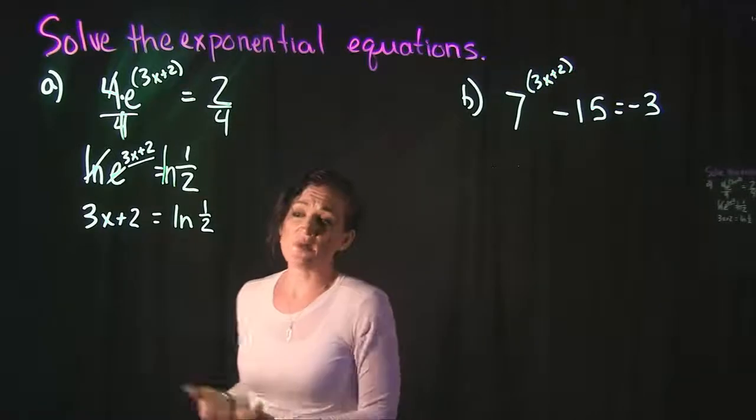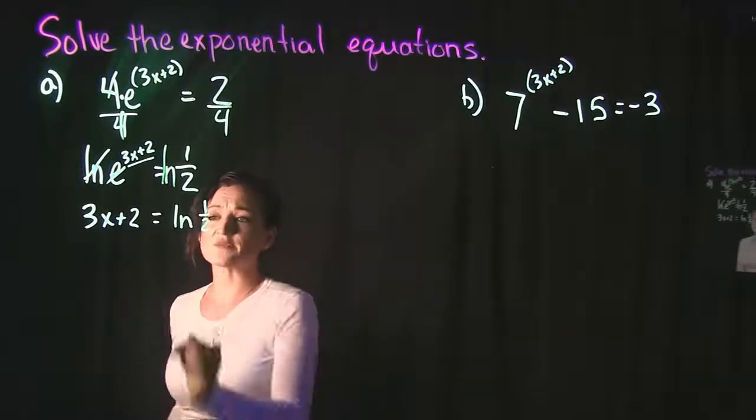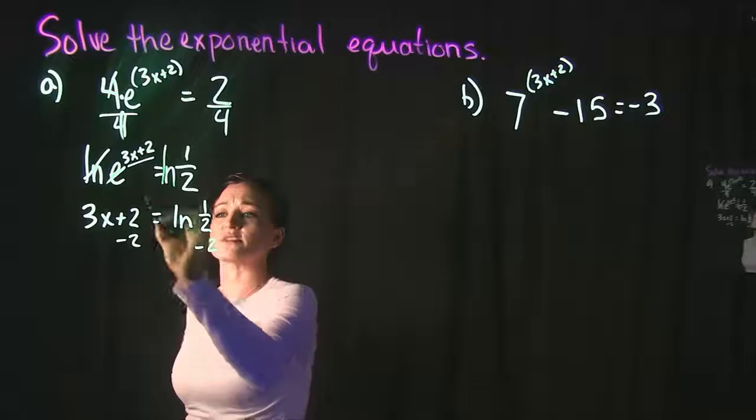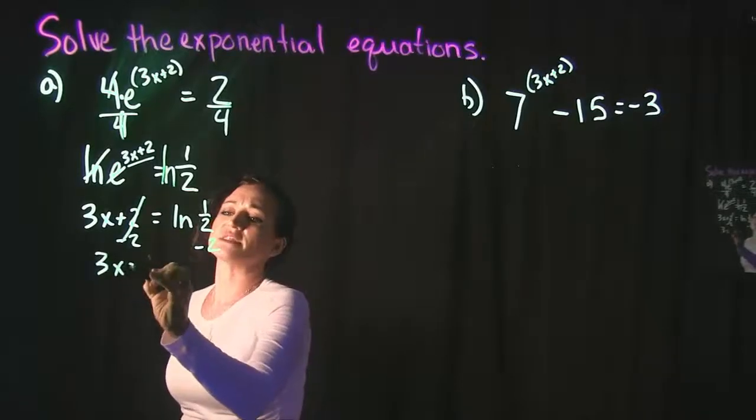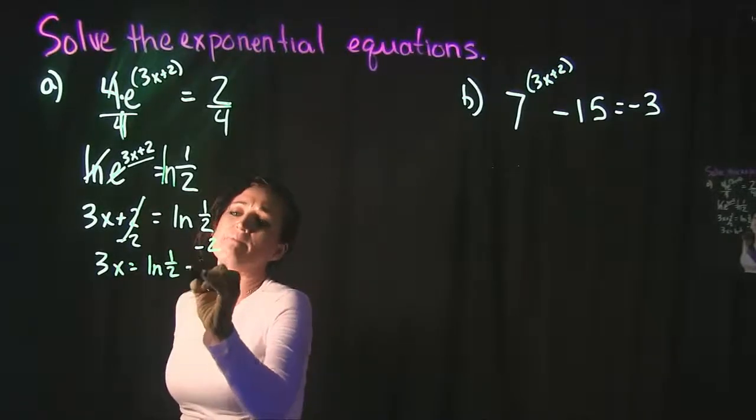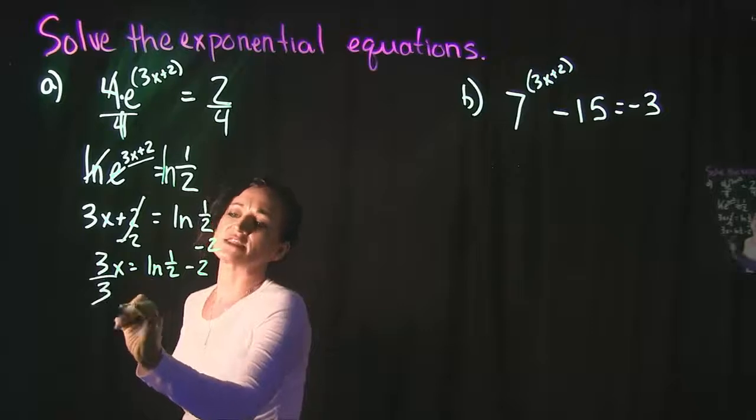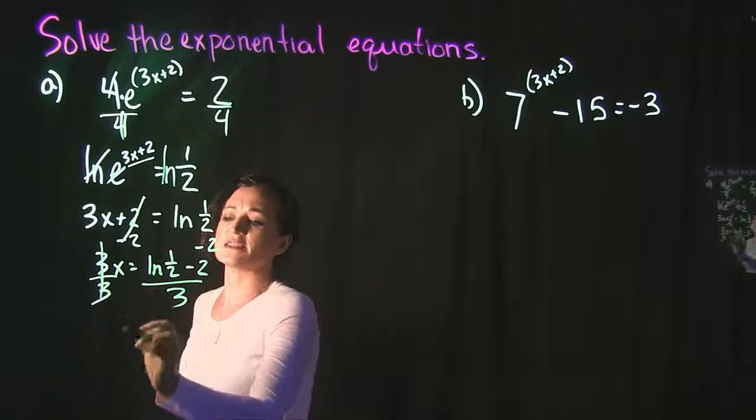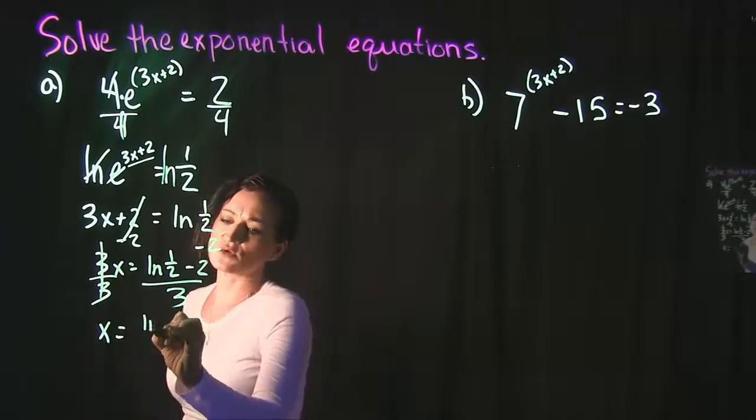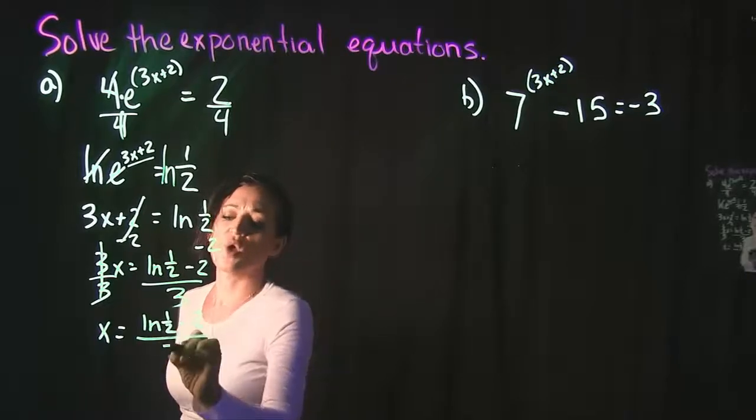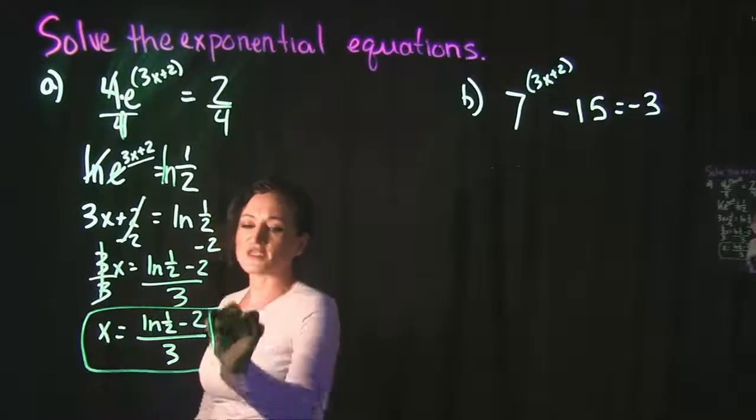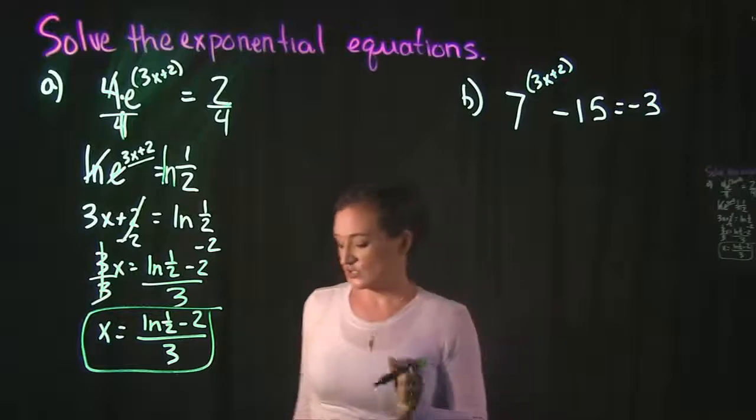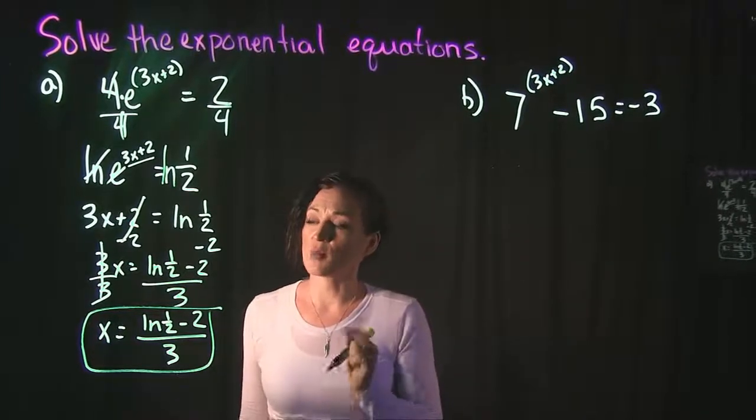Now we're solving for x, so we just need to do a little bit of algebra to get x by itself. Let's subtract 2 on both sides, getting 3x = ln(1/2) - 2. And then let's divide by 3 on both sides to get x = (ln(1/2) - 2)/3 as our final answer.